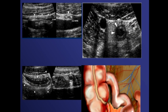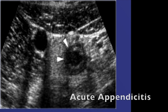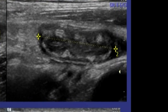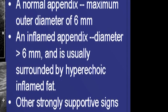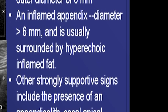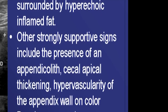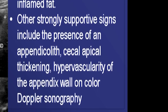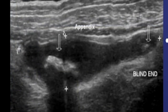The most common application is appendicitis. A normal appendix is rarely seen; in children it is less than six millimeters. When inflamed, we see fat stranding around the appendix — that is how we diagnose appendicitis in most cases. There is also hypervascularity. A normal appendix is less than six millimeters; anything more than six millimeters is usually surrounded by hyperechoic inflamed fat.